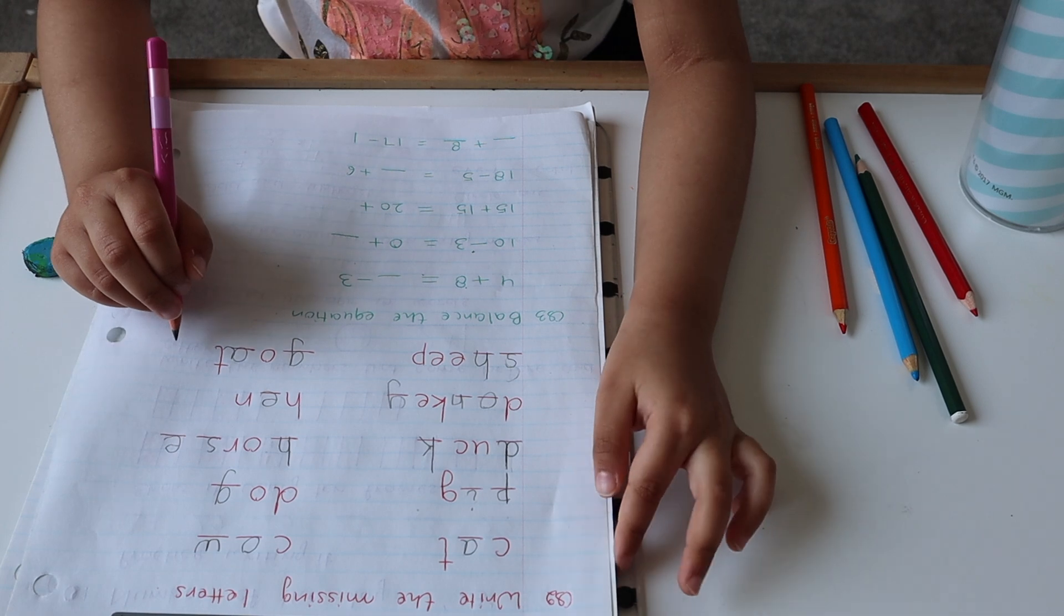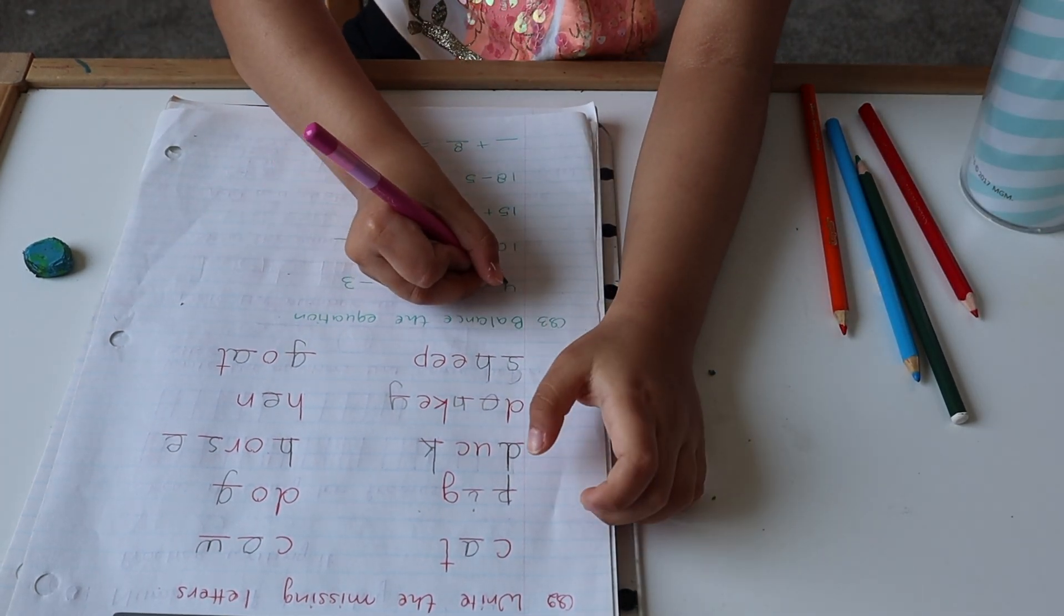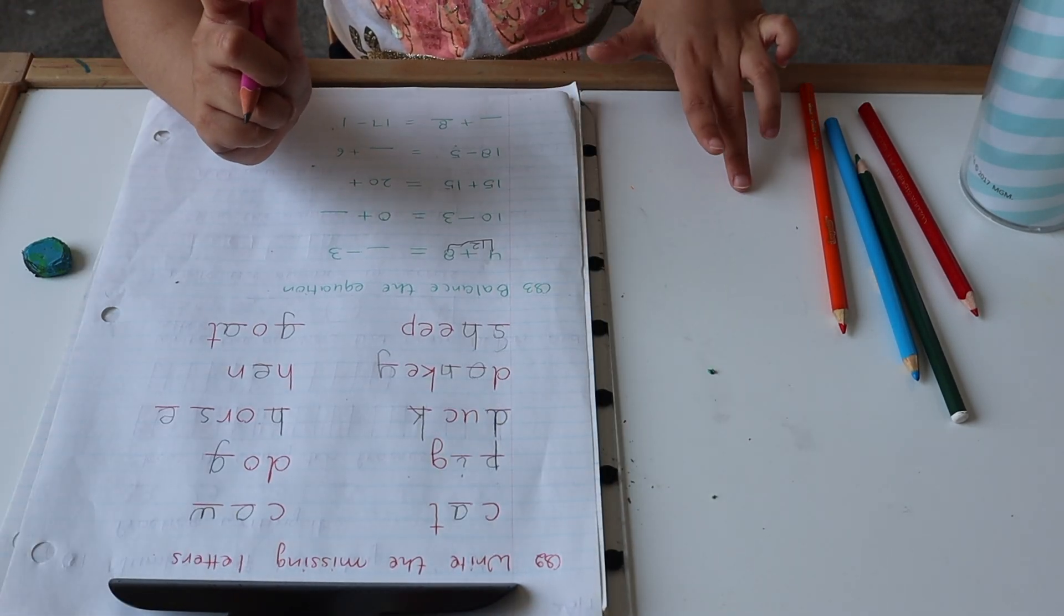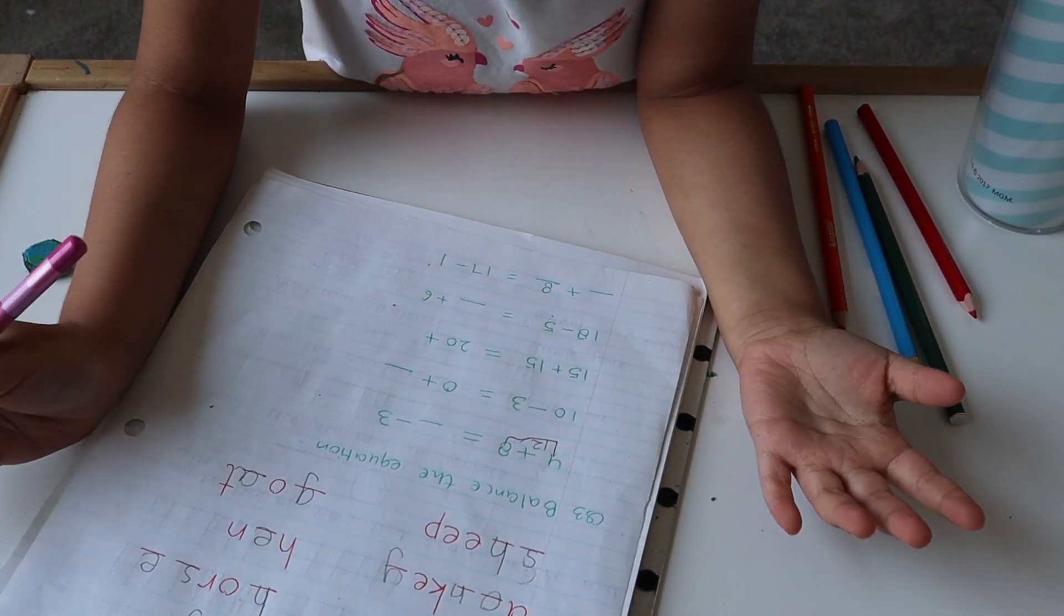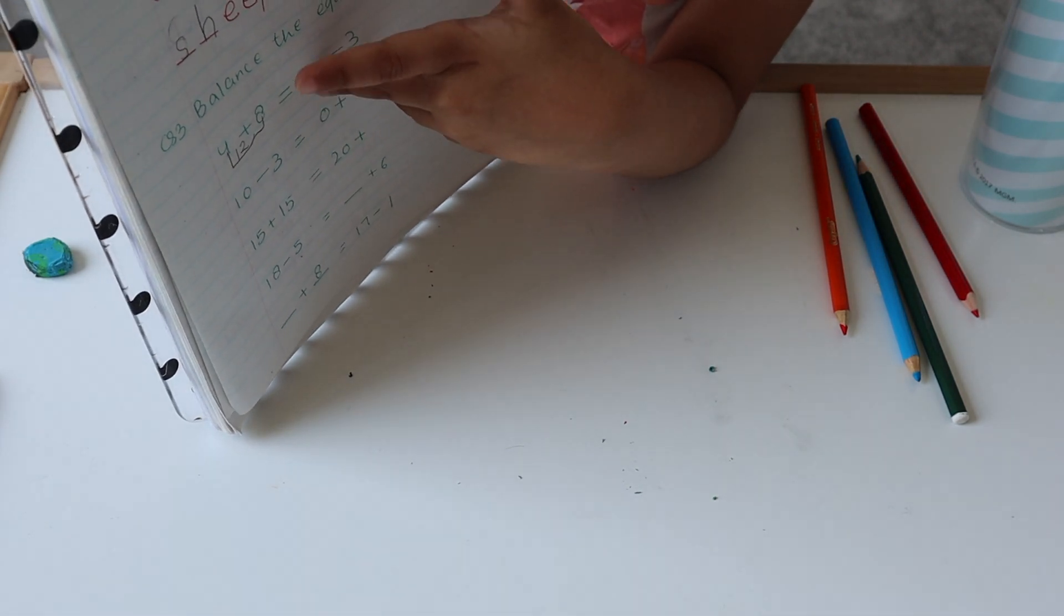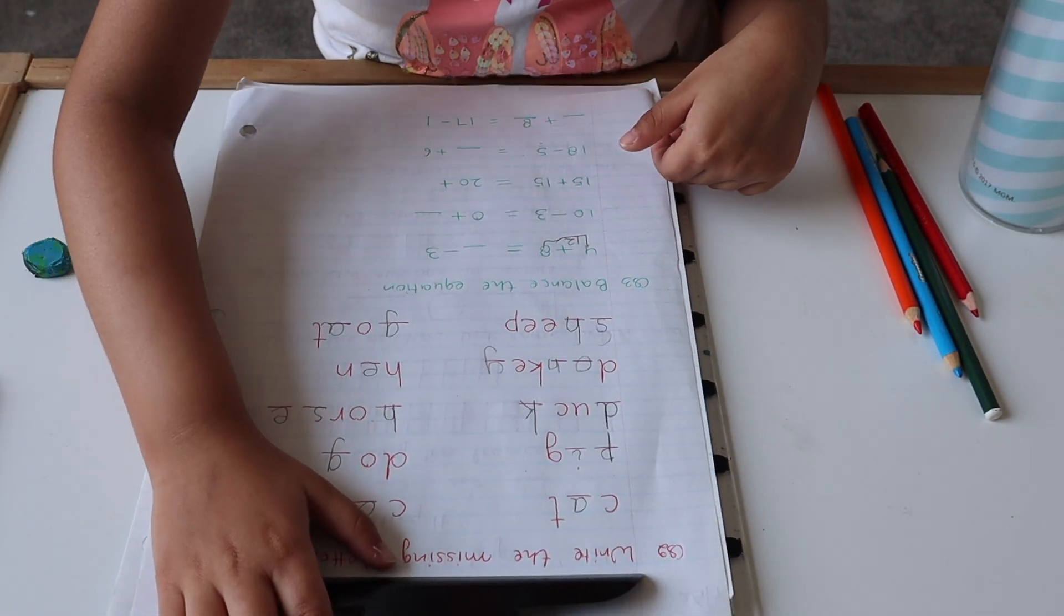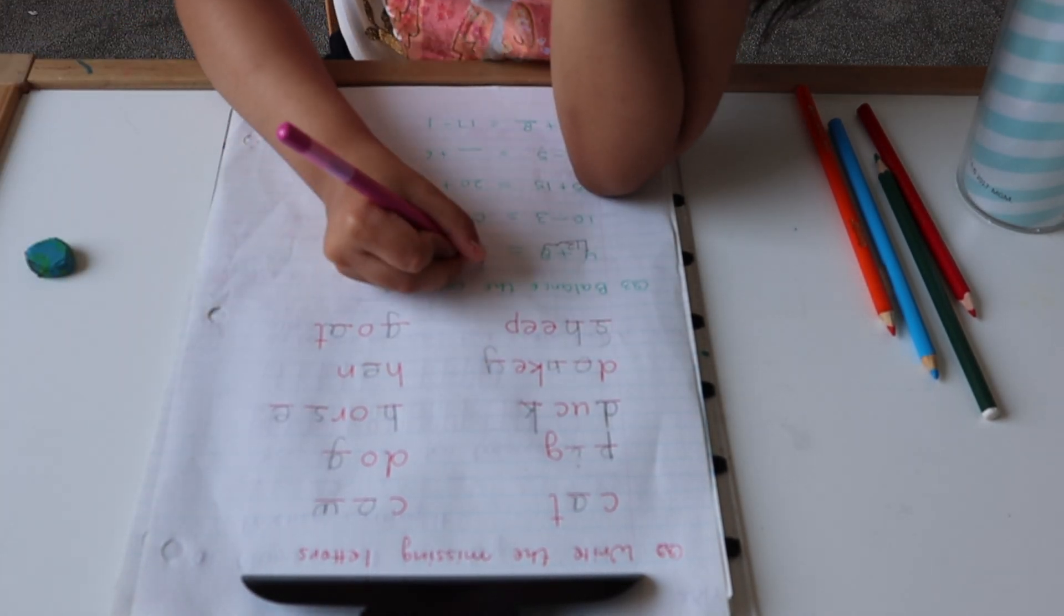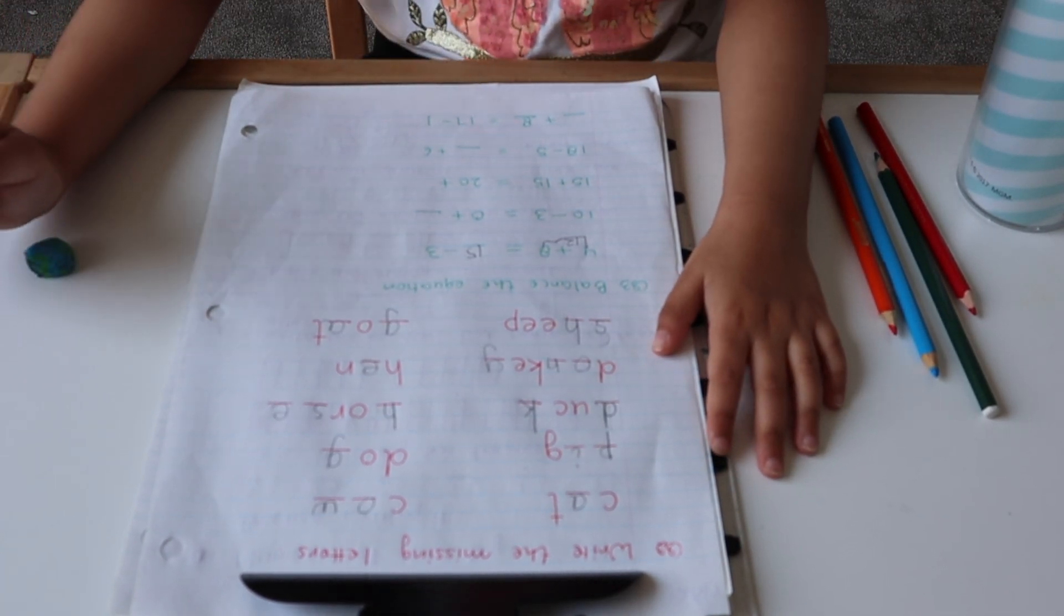Balance the equation. 4 plus 8 equals 12. You forgot to do something. To make 12, you put 3 minus. We need plus. Why do you need plus? Think of some number. But if you minus 3 from it, the answer will be what do we need? 12. 15. 15 minus 3 equals 12. Very nice, good job.